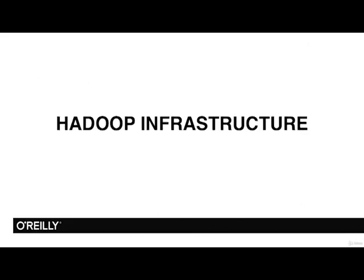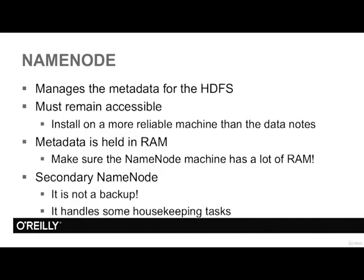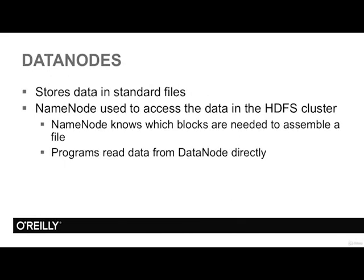We are going to explore the key elements of the Hadoop infrastructure. First, we have the NameNode. The primary purpose of the NameNode is to manage the metadata for HDFS. Since no processing on a Hadoop cluster will happen without HDFS working properly, the NameNode must remain accessible, which naturally leads us to install it on a more reliable machine than the processing nodes. The metadata — information about our files — is held in RAM, which is why machines running the NameNode should have a lot of RAM. The secondary NameNode is not a backup; its purpose is to offload some housekeeping tasks to another machine. The second part of the infrastructure consists of DataNodes, which do the processing and also store data in normal files.